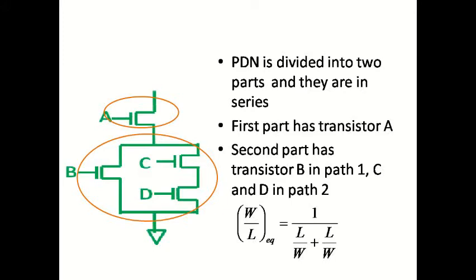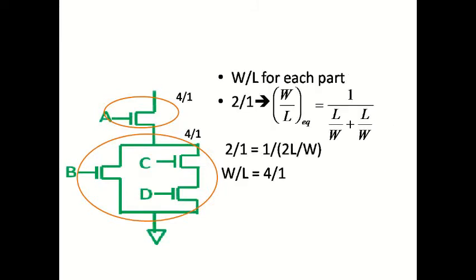If transistors are connected in series, the effective W by L is equal to 1 divided by the sum of L by W terms, one for each transistor in series. Since we have considered two paths, each path will provide an equivalent W by L. To find W by L for each path, the equivalent W by L is 2 by 1, which equals 1 by (L/W + L/W). Simplifying gives 2 by 1 equal to 1 by 2L by W, which indicates W by L equal to 4 by 1.